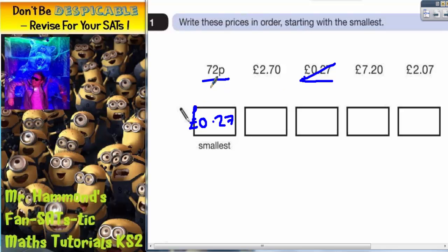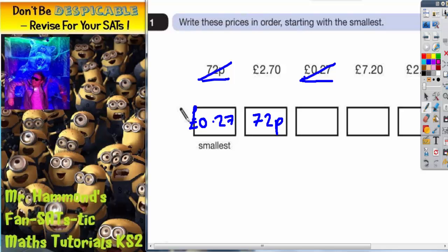The only other one smaller than a pound is the 72 pence, so that's going to come next. Cross that one off and then we've got three left.